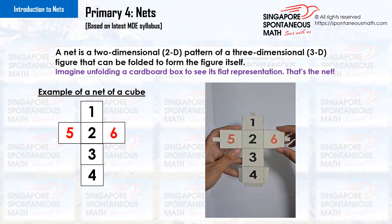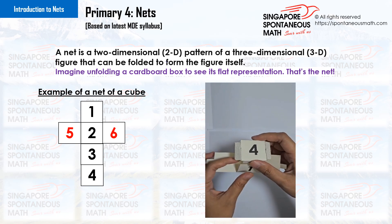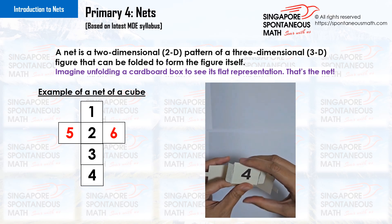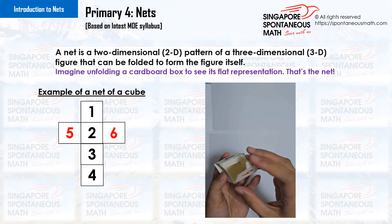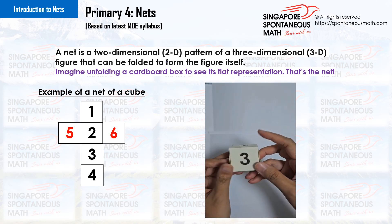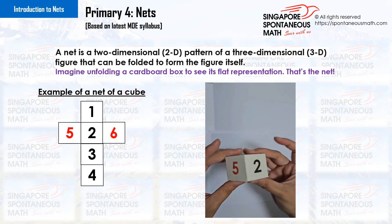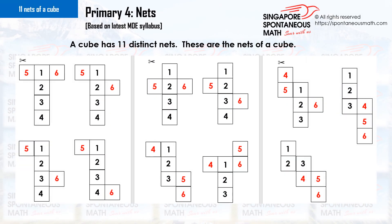This is an example of a net of a cube. Let's watch the video to see how the cube is formed. A cube has 11 distinct nets. These are the nets of a cube.